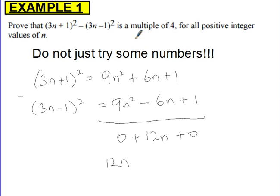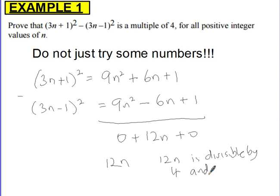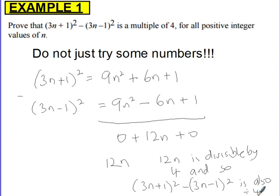We need to show that 12n is a multiple of 4. Any number that's a multiple of 12, as this would be, is also a multiple of 4. So 12n is divisible by 4, and therefore (3n + 1) squared minus (3n − 1) squared is also divisible by 4. In the exam, it's advisable to write it correctly — using the words 'is a multiple of 4' would be the safest bet.